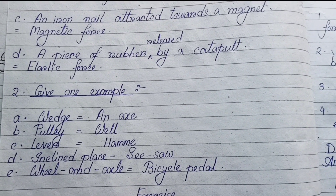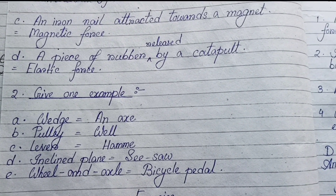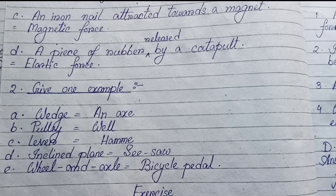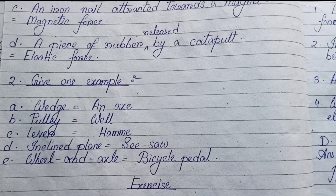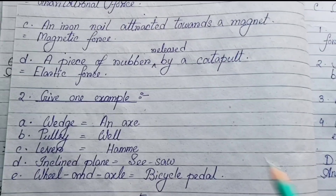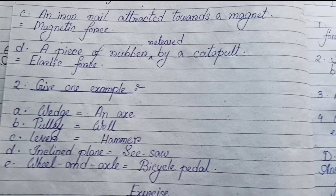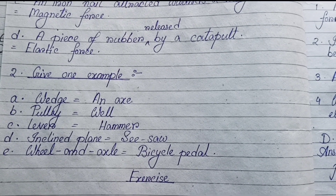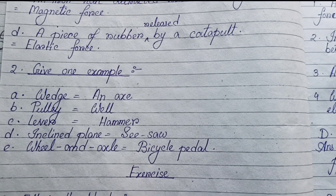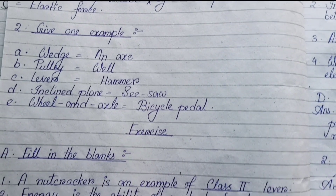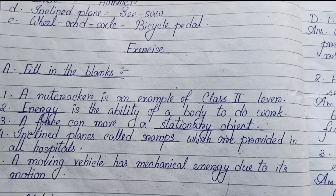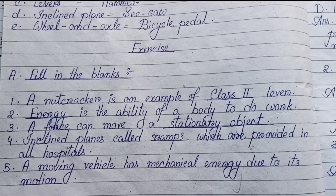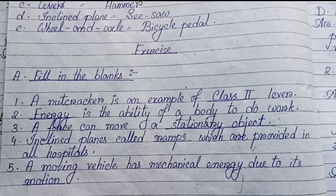Number two: Give an example of each simple machine. Wedge, inclined plane, pulley, lever, hammer, screw, seesaw, wheel and axle — bicycle paddle.